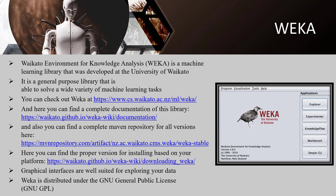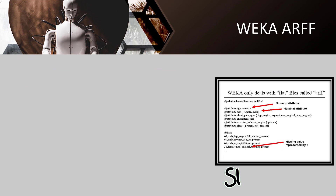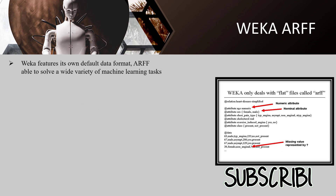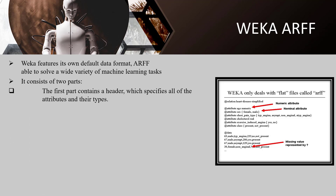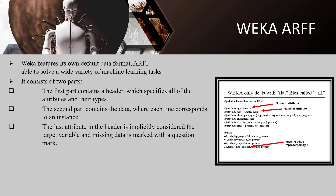You can even distribute WEKA commercially, but you must disclose the source code or obtain a commercial license. In addition to several supported file formats, WEKA features its own default data format, ARFF, to describe data by attribute-data pairs. It consists of two parts: the first part contains a header specifying all attributes and their types — nominal, numeric, date, and string. The second part contains the data where each line corresponds to an instance, the last attribute is implicitly the target variable, and missing data is marked with a question mark.